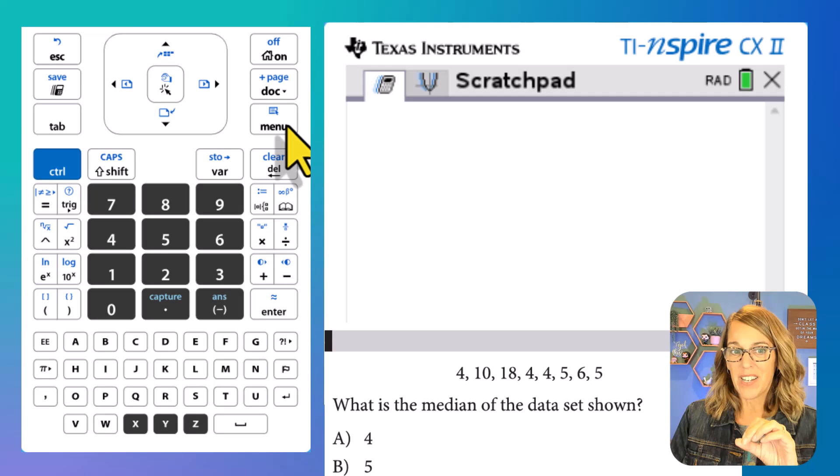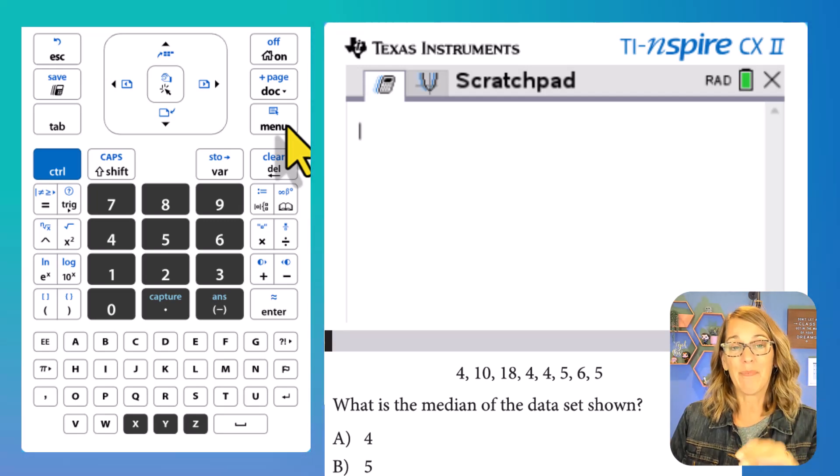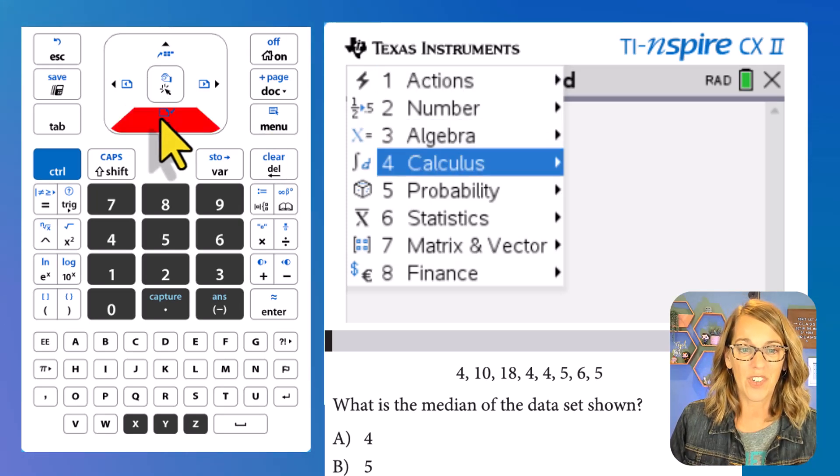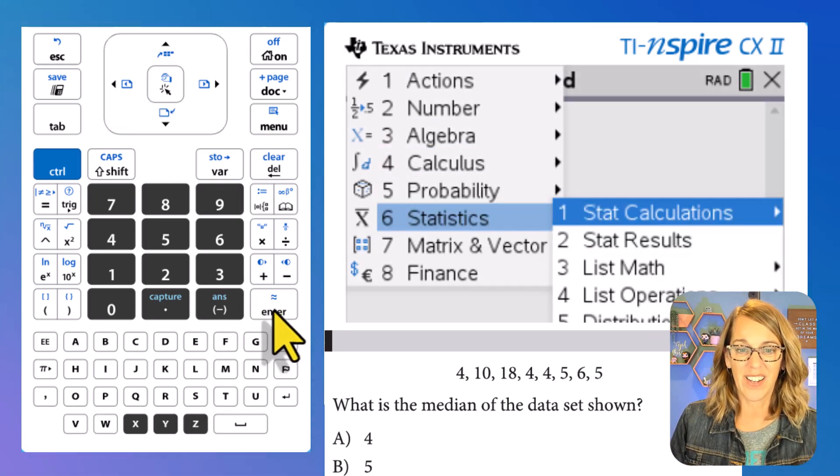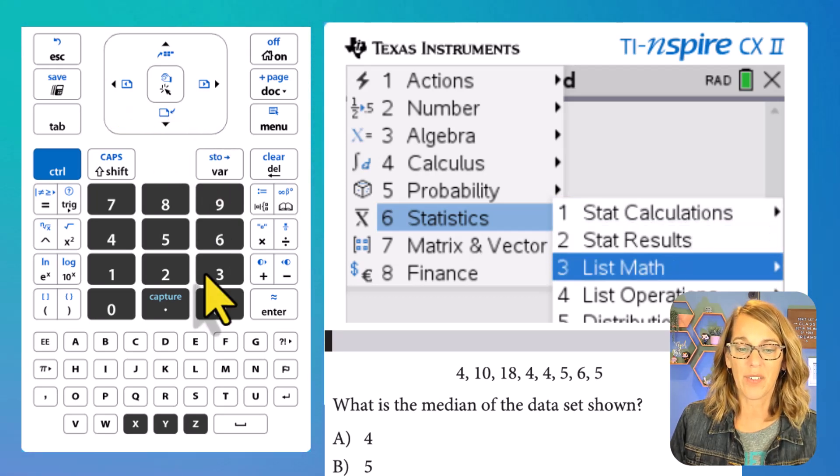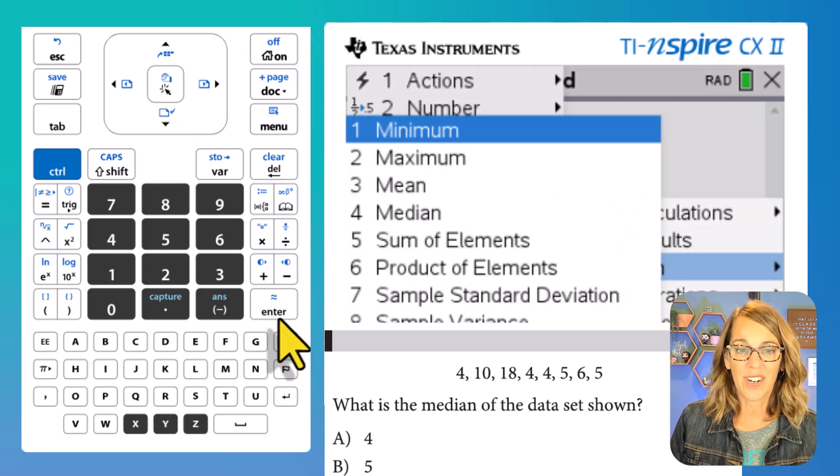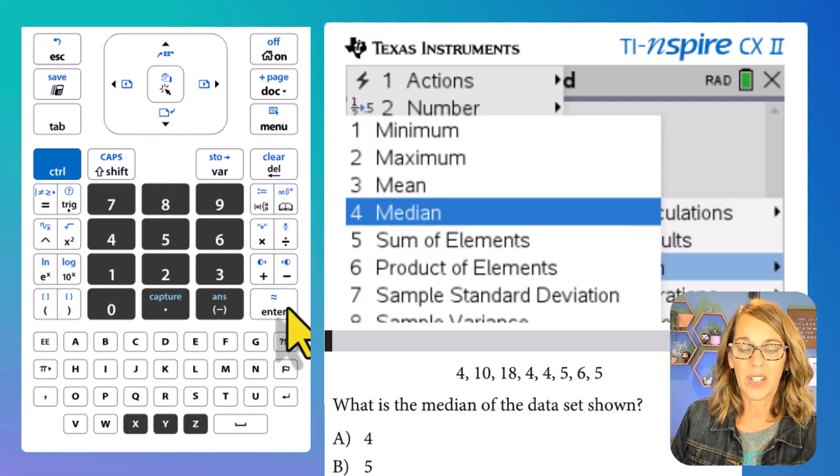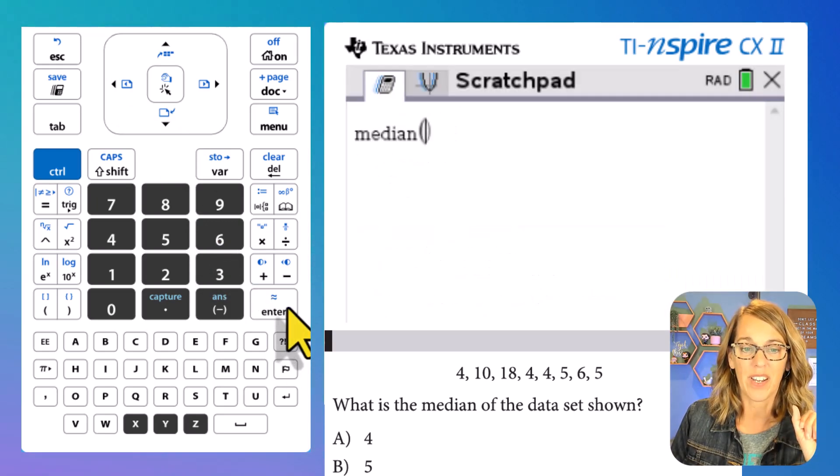We again want to go to the menu here in my scratch pad, but now I'm looking for some statistic function. So we're going to go to menu. I want statistics, which is number 6, and then enter. And we want to do some list math. So arrowing down to number 3, enter. I am looking for it. There's my median there, number 4. So you can type 4 or arrow down and enter.